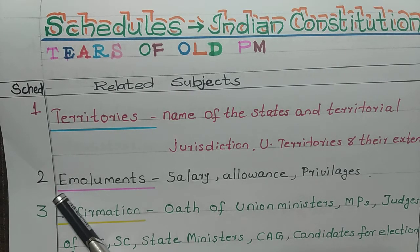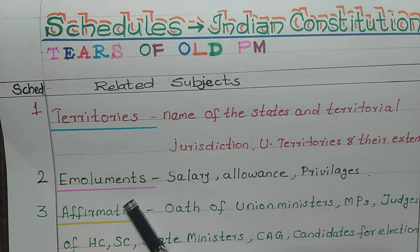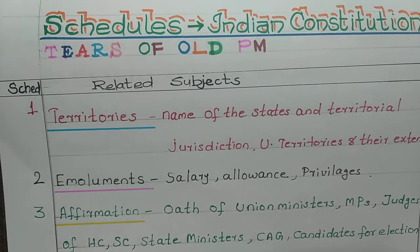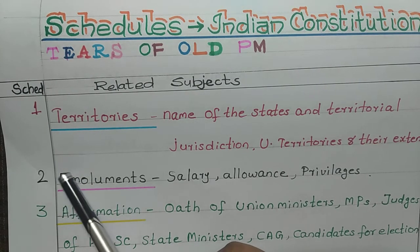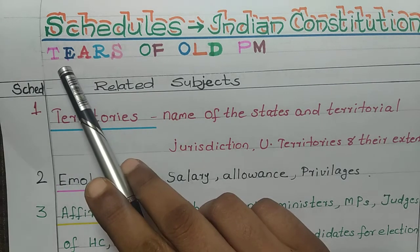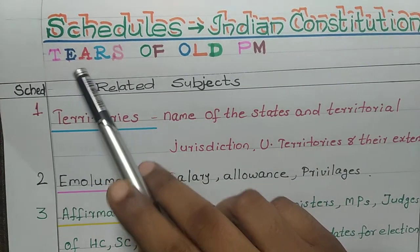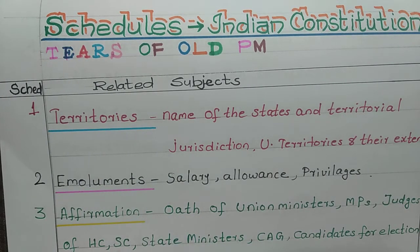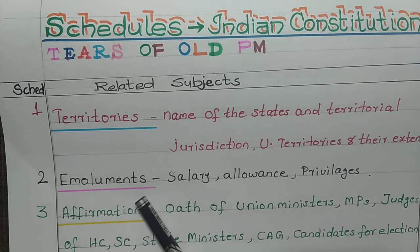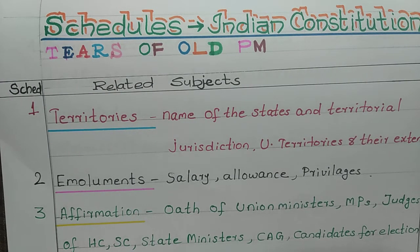Second schedule: the keyword is emolument. E is the first letter of emolument in 'Tears of Old PM.' Emolument means salary. So, second schedule consists of the salary, allowance, privileges, etc. of the President, Vice President, Prime Minister, MPs, judges of the High Court, Supreme Court, CAG, etc.